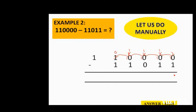Come to the second column: 1 minus 1 is 0. Next, 1 minus 0 is 1. Then 1 minus 1 is 0. Then 0 minus 1 is not possible, so it asks a borrow from the last column, which has 1 and can give it — it turns to 0 and the borrow is passed to the next column. So 10 is 2, and 2 minus 1 is 1. The last column: 0 minus 0 is 0. The final answer is 101010.